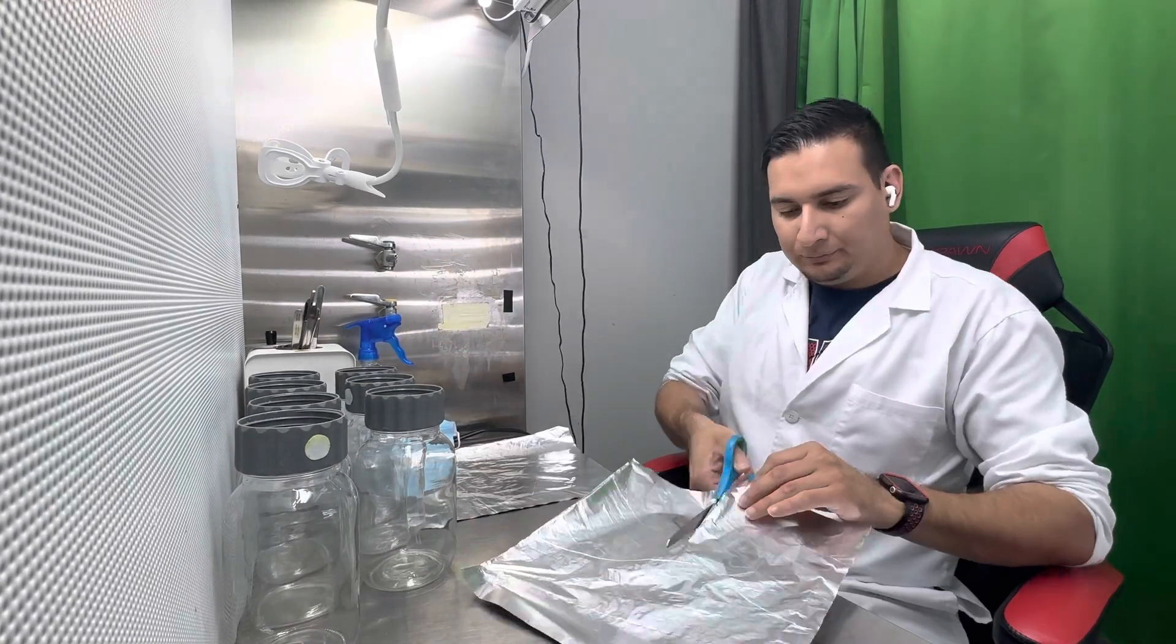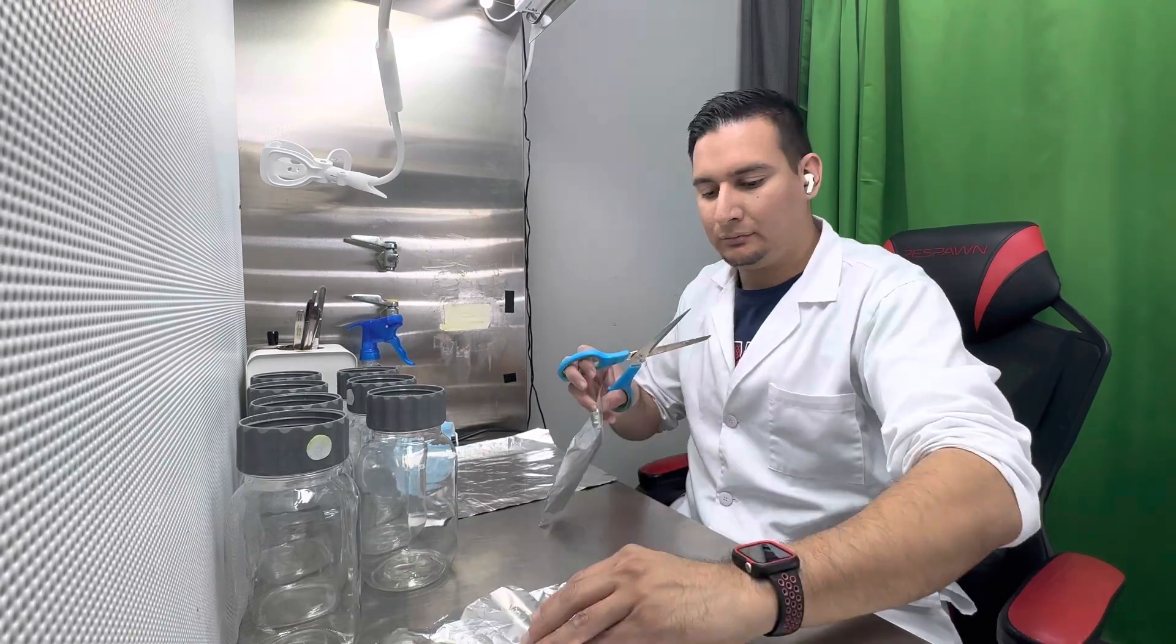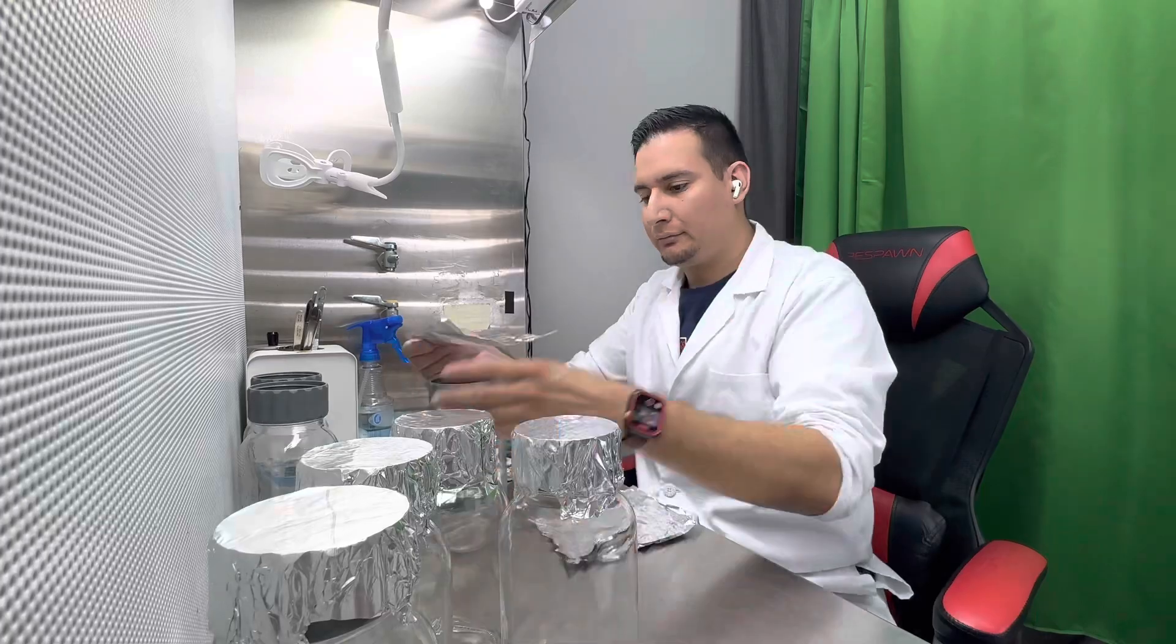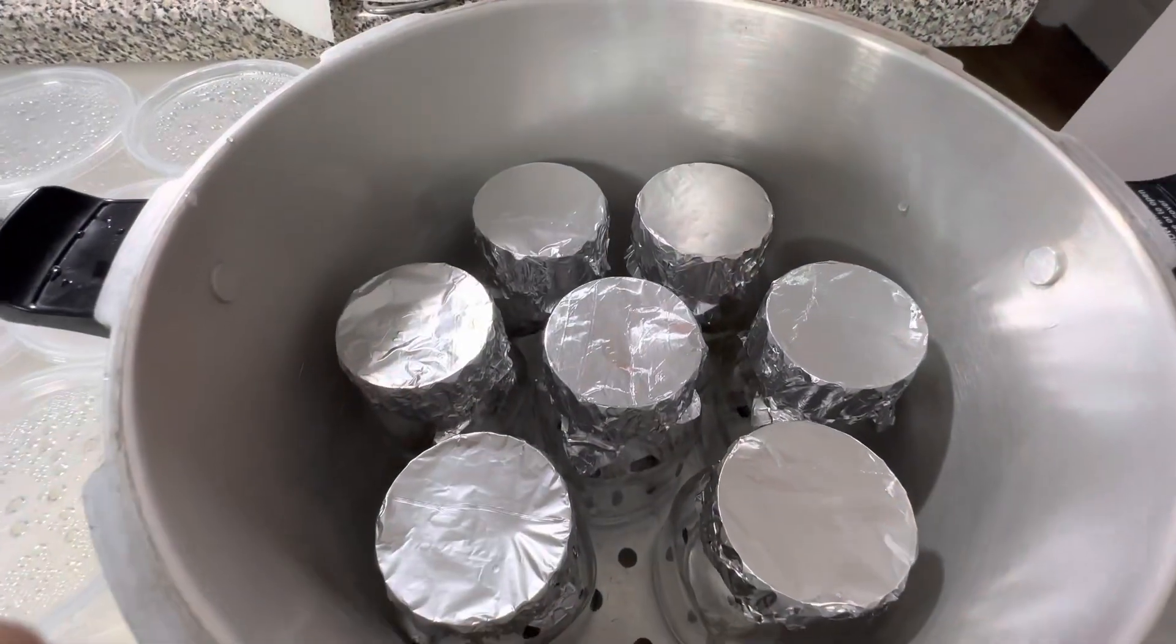But first I need to sterilize the biocouplers, so I place a piece of aluminum foil on top of the cap of the biocouplers and then sterilize the jars in the pressure cooker.